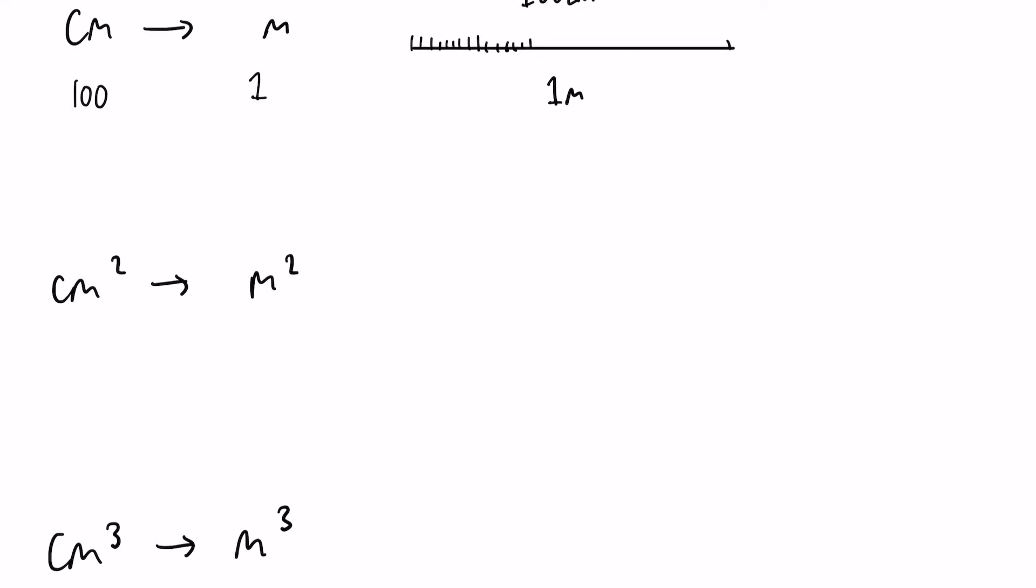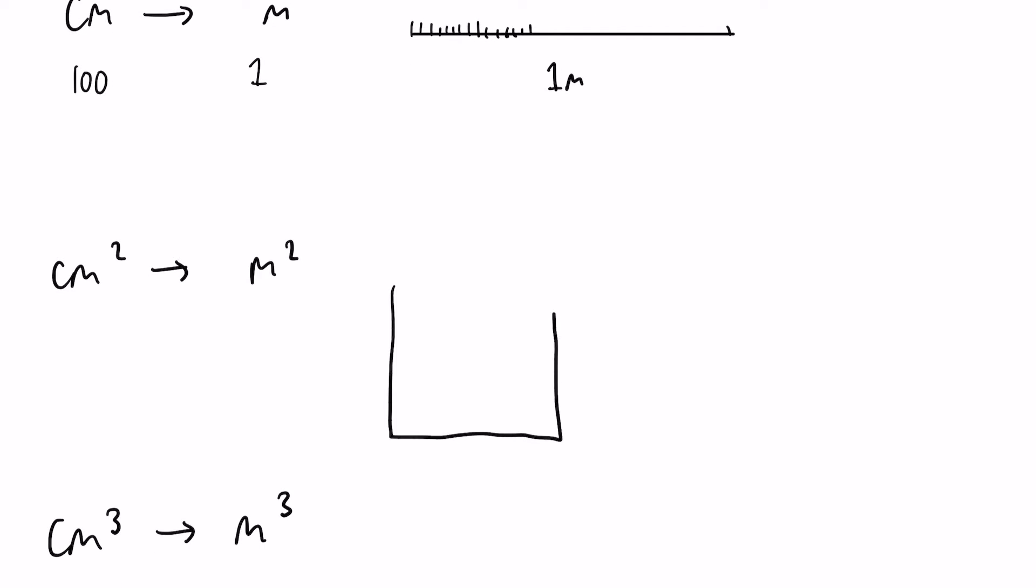Imagine instead of a line this time, imagine we have a square. When we're talking about centimeters squared, we're often referring to an area. A one meter squared square would be a square that has sides of one meter. If we look at centimeters, we're going to have a hundred centimeters on each of those. If we're doing the area in meters squared, it's just one times one, which is one. However, if we look at that area as centimeters, we have a hundred by a hundred, which is ten thousand centimeters squared. Notice how you multiply by a hundred each time.